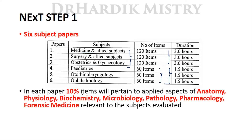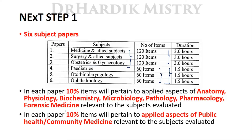In each paper, 10% of items will pertain to the applied aspects of Anatomy, Physiology, Biochemistry, Microbiology, Pathology, Pharmacology, and Forensic Medicine relevant to the subject evaluated. Additionally, 10% of items will pertain to the applied aspect of Public Health or Community Medicine relevant to the subject. So 20% of questions cover applied preclinical, paraclinical, and public health aspects, while the remaining 80% will be subject-related questions.